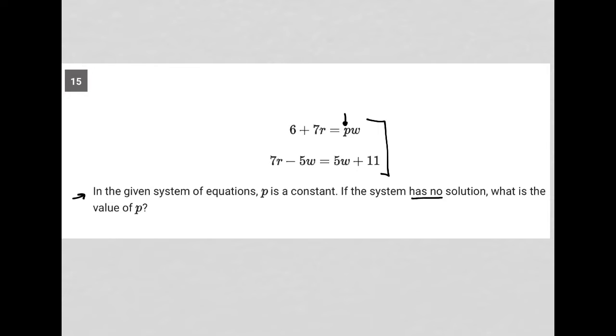If the system has no solution, what is the value of P? What does it mean for the system to have no solution? It means that the variables cancel. That's the first thing we're going to look for. There's a second thing, but I'll address that later.